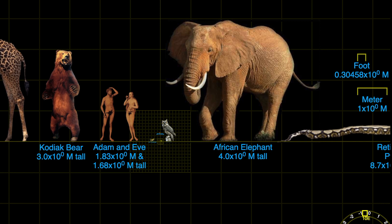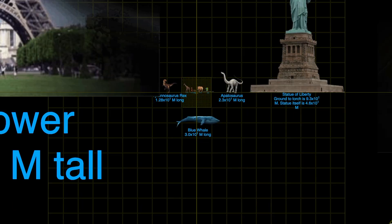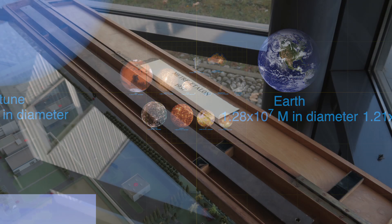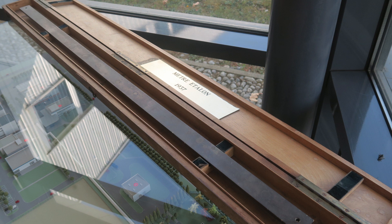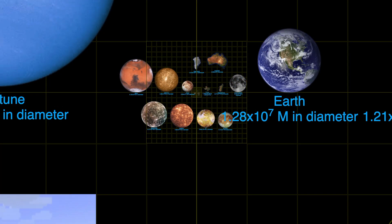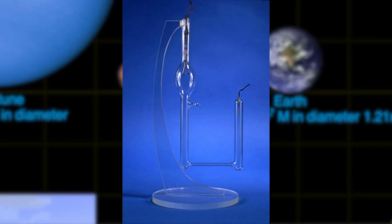In 1793, the meter was defined as one ten-millionth the distance from the equator to the North Pole. Since 1793, the meter has been redefined by three other methods. A prototype meter bar replaced the mathematical calculation in 1799. Defining the meter by a physical object proved to be difficult, so in 1960 the definition was again replaced — this time by a physical property: the emission of a specific wavelength of light from a Krypton-86 atom in a vacuum.